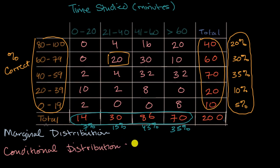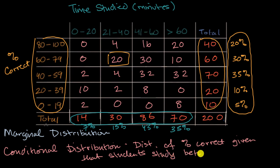So for example, an example of a conditional distribution would be the distribution of percent correct given that students study between, let's say, 41 and 60 minutes.